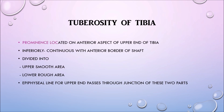On to the tuberosity of the tibia. It is a prominence located on the anterior aspect of the upper end of the tibia, inferiorly continuous with the anterior border of the shaft. It is divided into an upper smooth area and a lower rough area. The epiphyseal line for the upper end passes through the junction of these two parts.